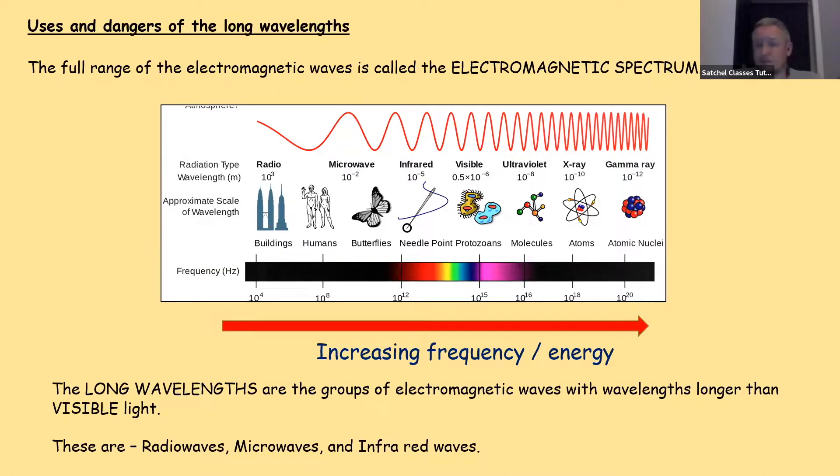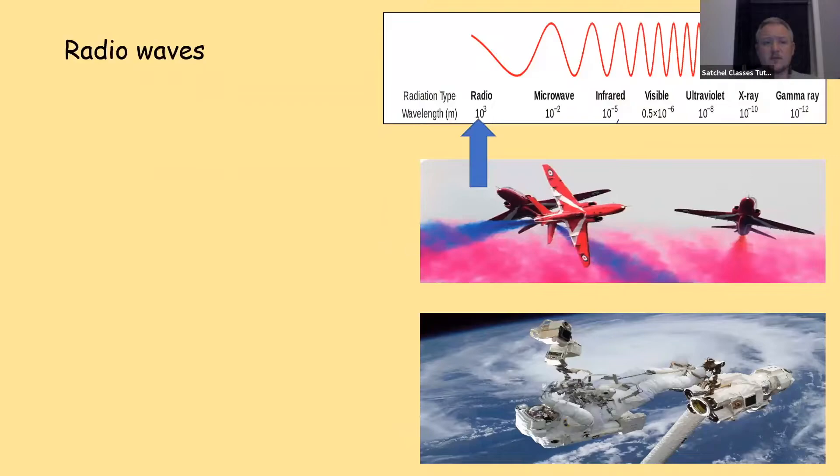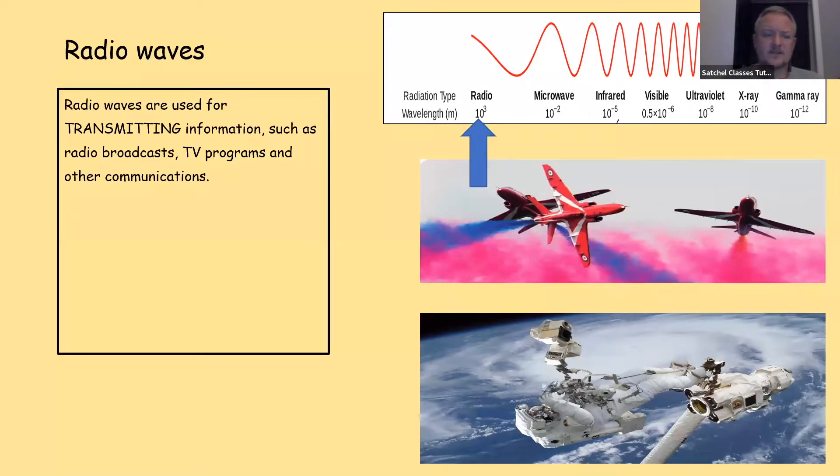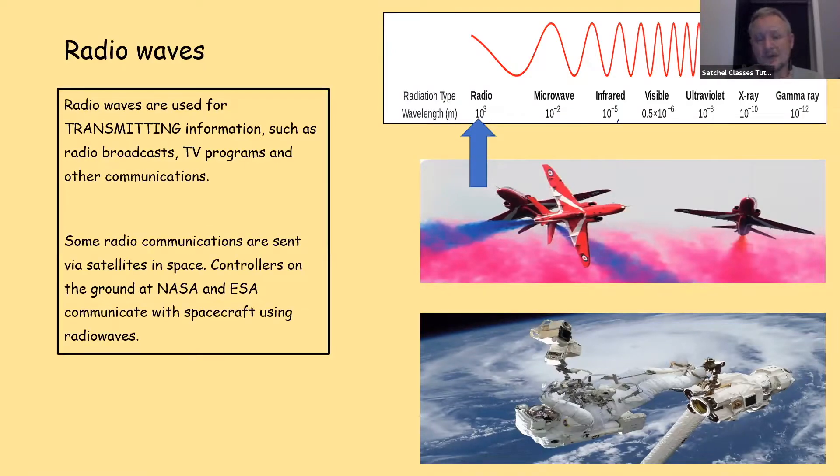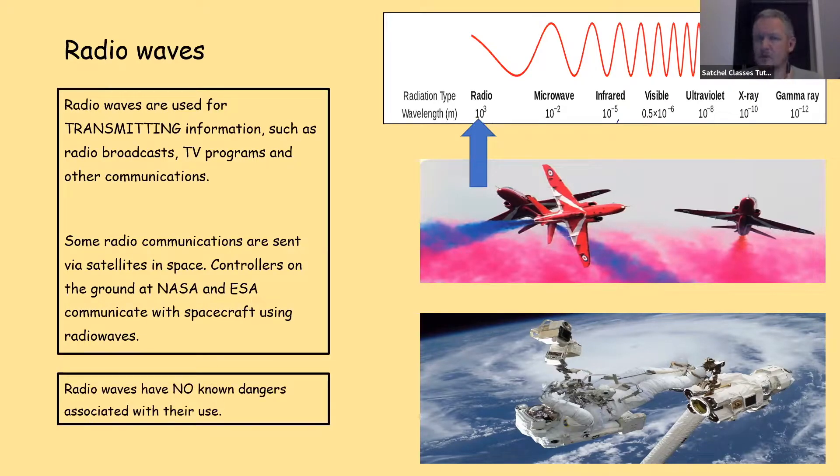Uses and dangers of long wavelengths. The full range of electromagnetic waves is called the electromagnetic spectrum. The long wavelengths are the group of electromagnetic waves with wavelengths longer than visible light. These are radio waves, microwaves, and infrared waves. Let's start at the beginning. Radio waves. Radio waves are used for transmitting information. So we use them for radio broadcasts, TV programs, and some satellite communications. Some radio communications are also sent by satellites in space. Controllers on the ground at NASA and ESA, the National American Space Agency and European Space Agency, they communicate with spacecraft using radio waves. Because radio waves have such long wavelengths and such short frequencies, they have no known dangers associated with their use.